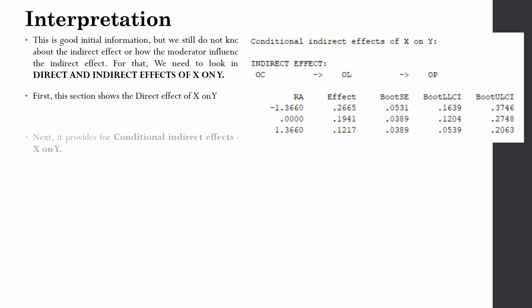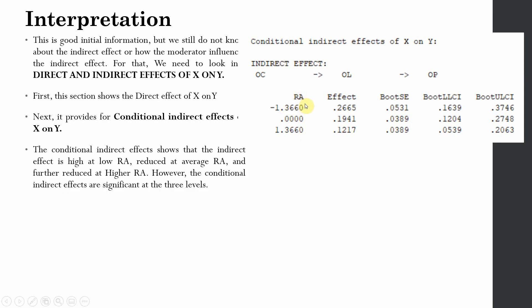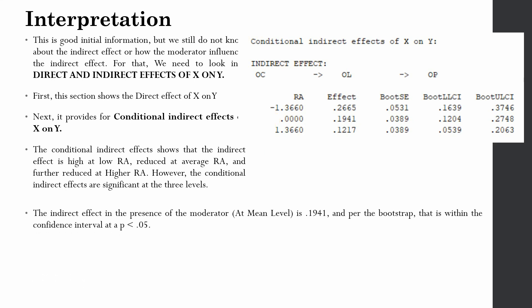There is an indirect effect at low role ambiguity, at average, and at high role ambiguity. The conditional indirect effect shows the indirect effect is highest at low role ambiguity, and although also present at average, it is lower at high role ambiguity. The conditional indirect effects are significant at all three levels. To determine whether there is moderated mediation — whether role ambiguity as a moderator changes the strength of the indirect effect — we need the index of moderated mediation.